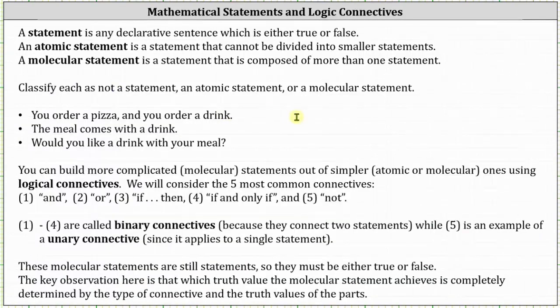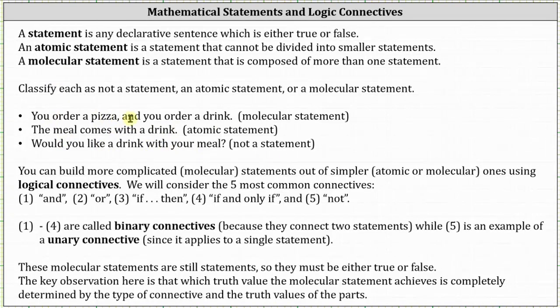Now let's look at three examples where we classify as not a statement, an atomic statement, or a molecular statement. You order a pizza and you order a drink. The meal comes with a drink. Would you like a drink with your meal? You order a pizza and you order a drink is a molecular statement because it can be divided into two smaller statements and each is either true or false. The meal comes with a drink is an atomic statement because it cannot be divided into smaller statements but again it is a declarative sentence which is either true or false. And then finally, would you like a drink with your meal is not a statement because it cannot be classified as true or false.